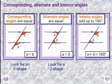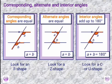Next, interior angles. They add up to 180 degrees. We have angle A and angle B, and when you add them together you get 180 degrees. To identify interior angles, look for a C or a U shape.